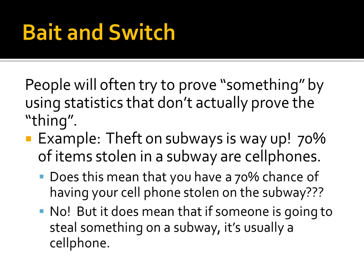One of the problems with statistics, because it is very easy to lie with them, is a concept called bait and switch. People will often try to prove something by using statistics that don't actually prove anything. For example: 'Theft on subways is way up — 70% of items stolen in a subway are cell phones.' Both statements refer to theft, but are they related? Not really. It doesn't mean you have a 70% chance of having your cell phone stolen on the subway — it means that if someone steals something on a subway, it's usually your cell phone.